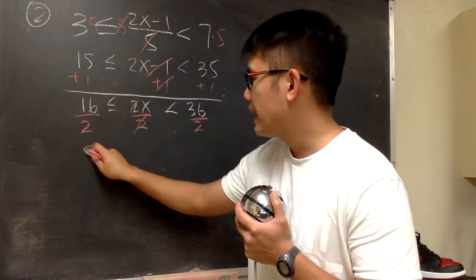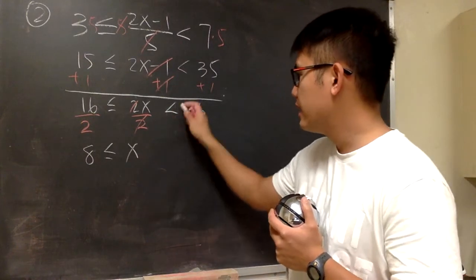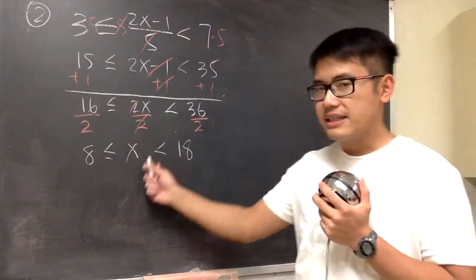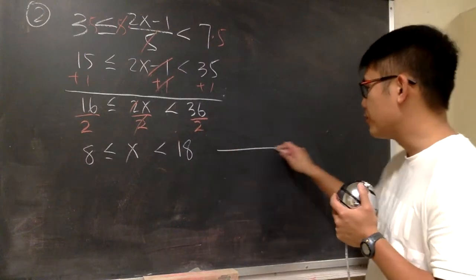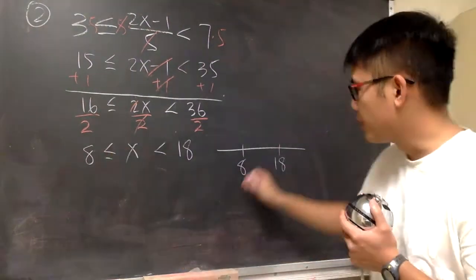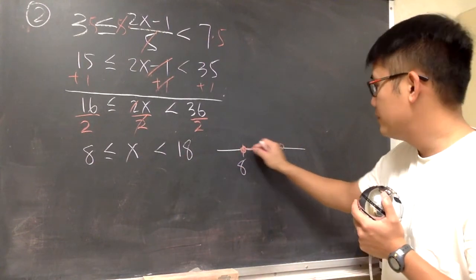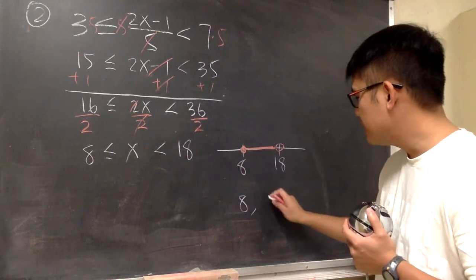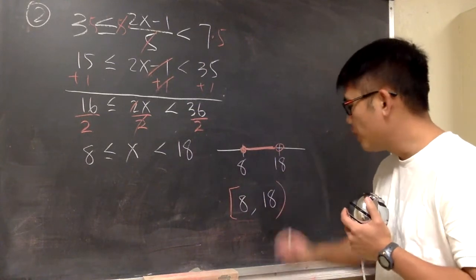At the end, 16 over 2 is 8 and 36 over 2 is 18, so x is between 8 and 18, including 8 but not including 18. For the graph, we mark 8 with a closed circle and 18 with an open circle, and shade in between. For interval notation, we write bracket 8 comma 18 parenthesis.